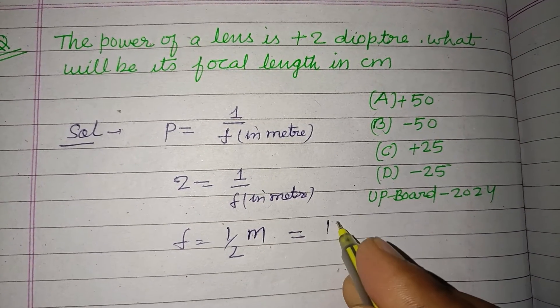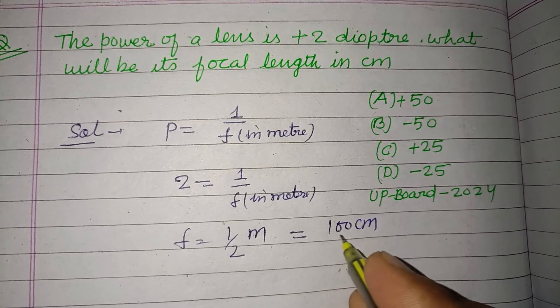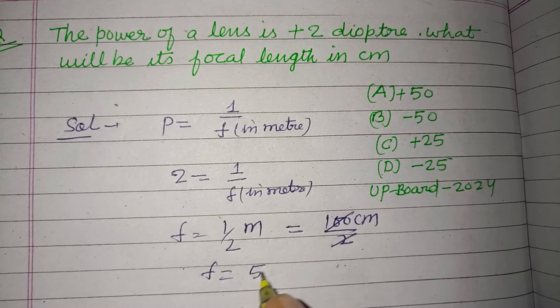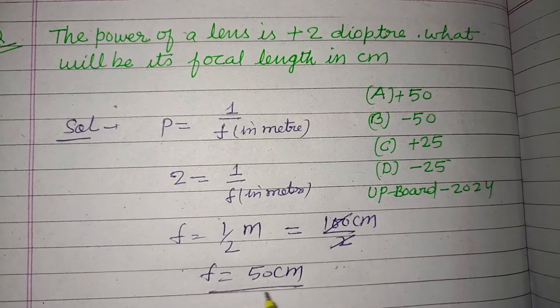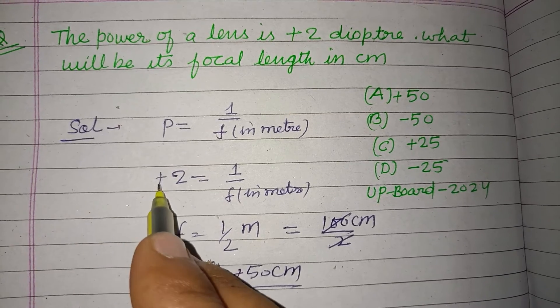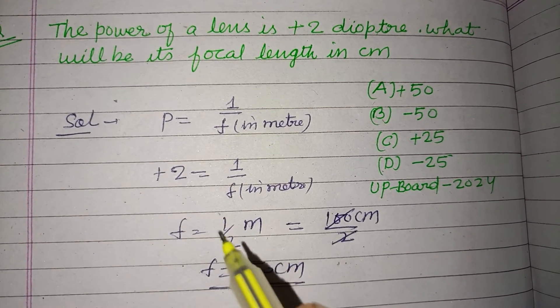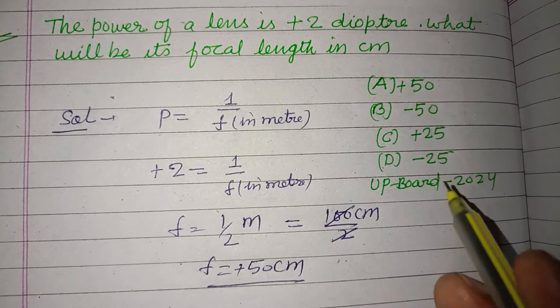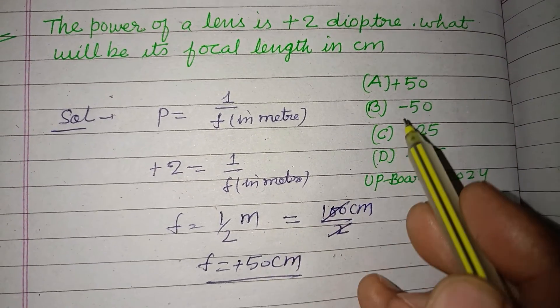in centimeter, then 1 meter equals 100 centimeter upon 2. So f equals 50 centimeter. So 50 centimeter, plus 50 centimeter because power is plus, so this is a convex lens. So the correct answer